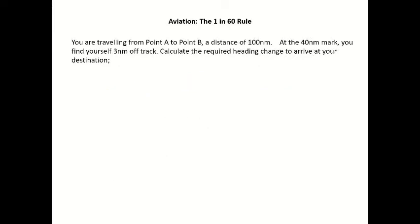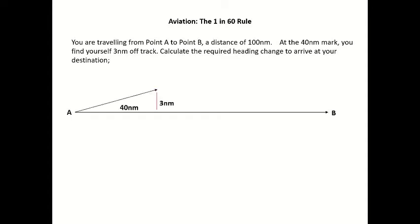Another example here, similar to the last one. You find yourself travelling from point A to point B, a distance of 100 nautical miles. At the 40 nautical mile mark, you find yourself 3 nautical miles off track. Calculate the required heading change to arrive at your destination. Draw the question out: point A to point B, 40 nautical miles along track, 3 nautical miles off track at our first measuring mark, and then 60 miles left to run to get us to point B.